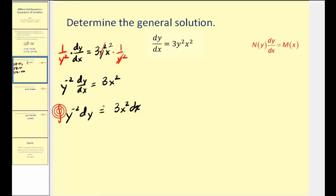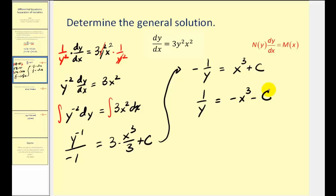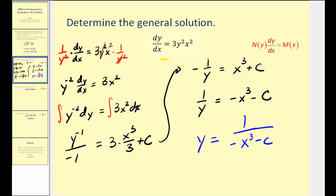Now we'll integrate both sides of the equation. The anti-derivative of y to the negative two is y to the negative one divided by negative one, and this equals three times x to the third over three plus c. Cleaning this up: negative one over y equals x cubed plus c. Multiplying through by negative one, we have one over y equals negative x cubed minus c. Solving for y, we get y equals one over negative x cubed minus c, which is the general solution.